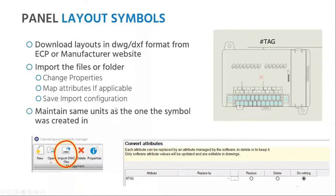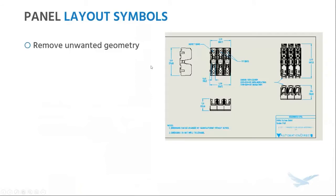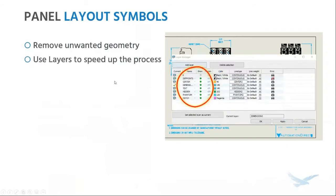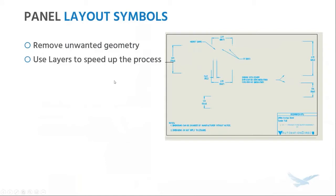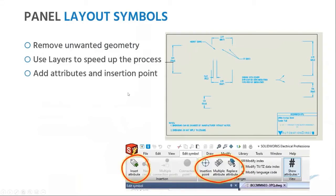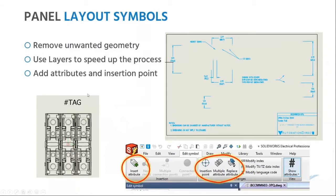If you're doing a whole lot of attribute mapping, you might want to save the import configuration as well. When setting the unit system of these symbols, you want to maintain the same units as the one the symbol was created in. Unfortunately, manufacturers will make a whole bunch of information available including other views, title blocks, and annotations that you may not want — so the first step is to remove any unwanted geometry. A lot of these unwanted geometries tend to be on different layers, so you can hide or show those layers, isolate what you don't want, and get rid of them. Once done, go ahead and add the attributes and the insertion points that you want, and you've got your perfect panel layout symbol.